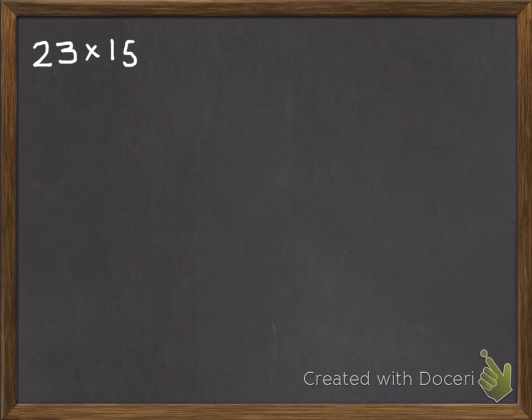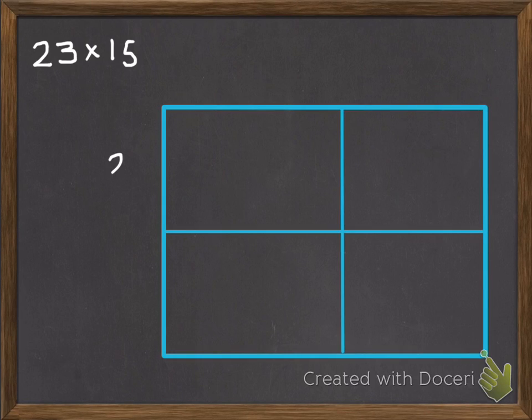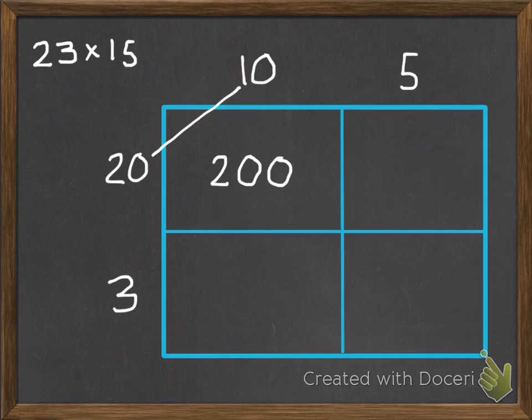Another strategy you can use is instead of breaking apart just one number, we can break apart both of our two-digit numbers. So our 23 we can break apart as 20 and 3, and our 15 we can break apart as 10 and 5. So this gives us four problems we have to do instead of two, but all four are super easy. For each box, we multiply the number to the left of it and above it.